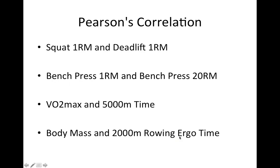So examples of where Pearson's correlation would be appropriate might be if we're looking for significant relationships between squat one repetition maximum and deadlift one rep max, or perhaps we might be interested in seeing whether there's a significant relationship between bench press 1 rep max and bench press 20 rep max, or maybe VO2 max and 5000 meter time trial performance, or perhaps we might be interested in whether or not a significant relationship exists between an individual's body mass and how quickly they can perform a 2000 meter time trial on a row machine. All of those would be examples of research whereby Pearson's correlation would be an appropriate statistical test.